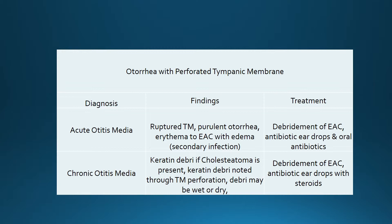Cholesteatoma can appear to be a grayish white keratinous mass in the anterior superior or inferior or posterior aspect of the tympanic membrane. The keratinous mass can be dry or wet, and a congenital cholesteatoma is generally identified behind the anterior superior aspect of the tympanic membrane. A conductive and sensorineural hearing loss can be associated with a cholesteatoma. A CT of the temporal bone will help delineate the extent of the cholesteatoma. Treatment typically involves excision of the cholesteatoma, and if left untreated, the cholesteatoma can become destructive to the ossicles, labyrinth, and erode into the facial nerve as well as extend beyond the middle ear space.